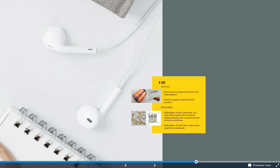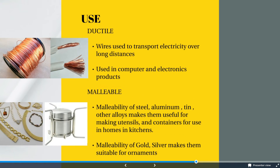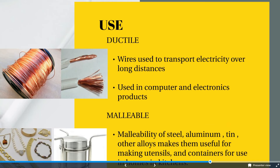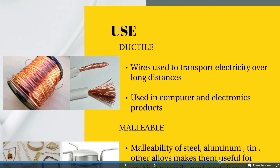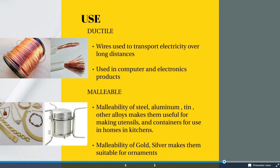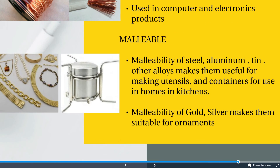Because of the ductile property we are able to make thin wires, which are used to transport electricity over long distances. Ductile materials are also widely used in computers and electronic products. Similarly, malleability of steel, aluminium, tin, and other alloys makes them useful for making utensils and other containers for use in homes and kitchens. The malleability of gold and silver makes them suitable for ornaments.